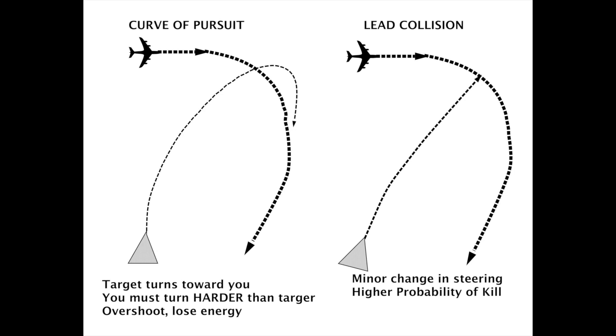As the target turns, the missile knows the changing distance and recomputes the point of impact and flies a fairly straight line and cannot be outmaneuvered.